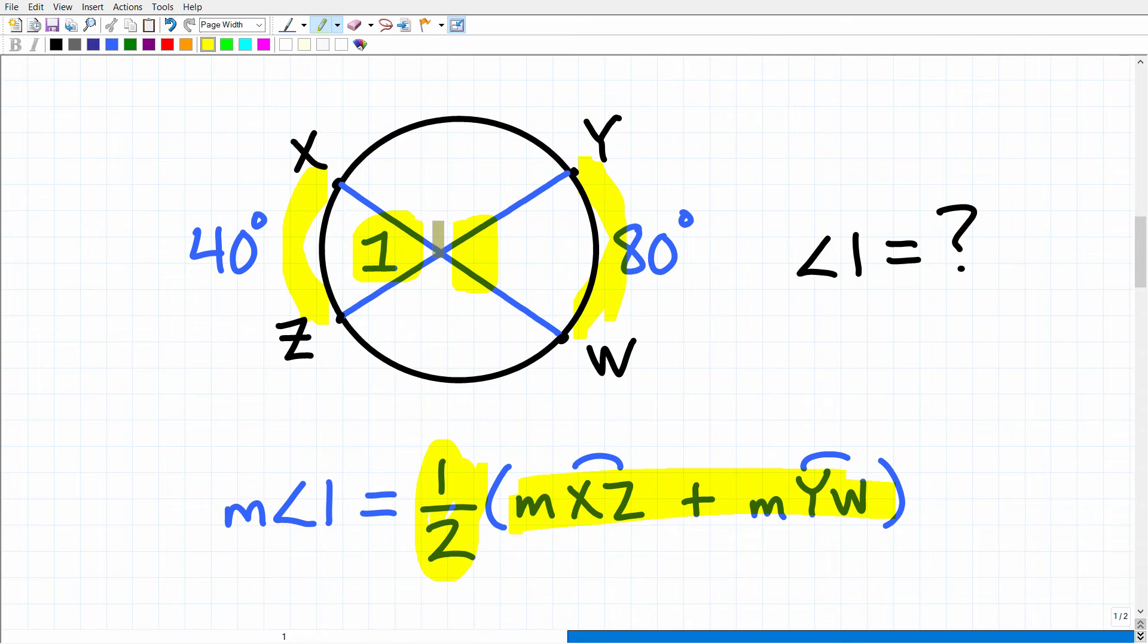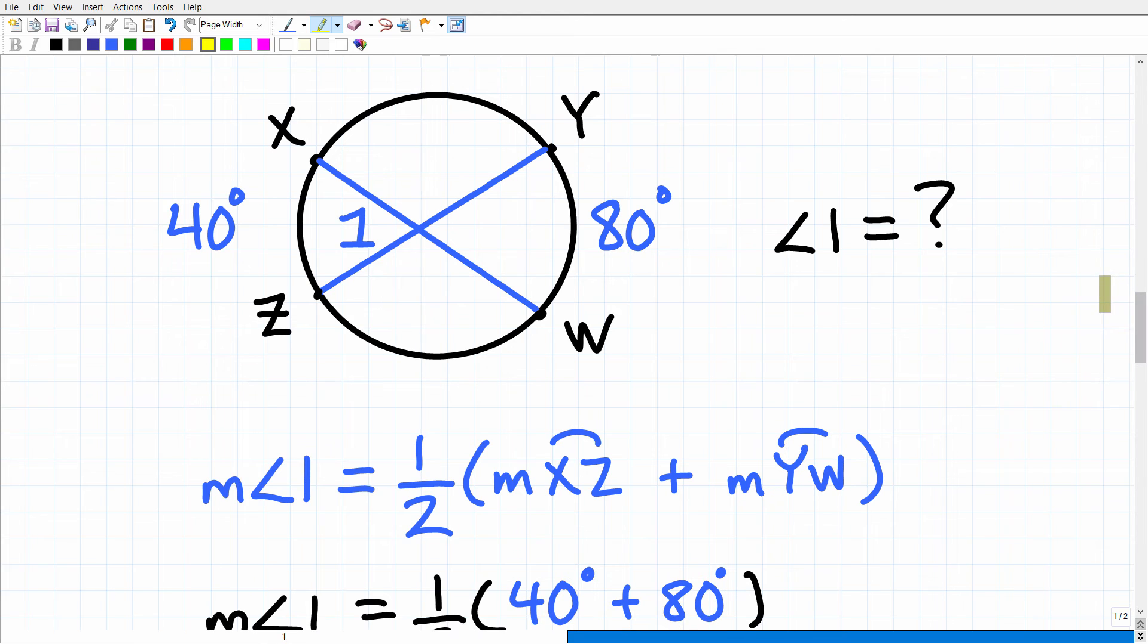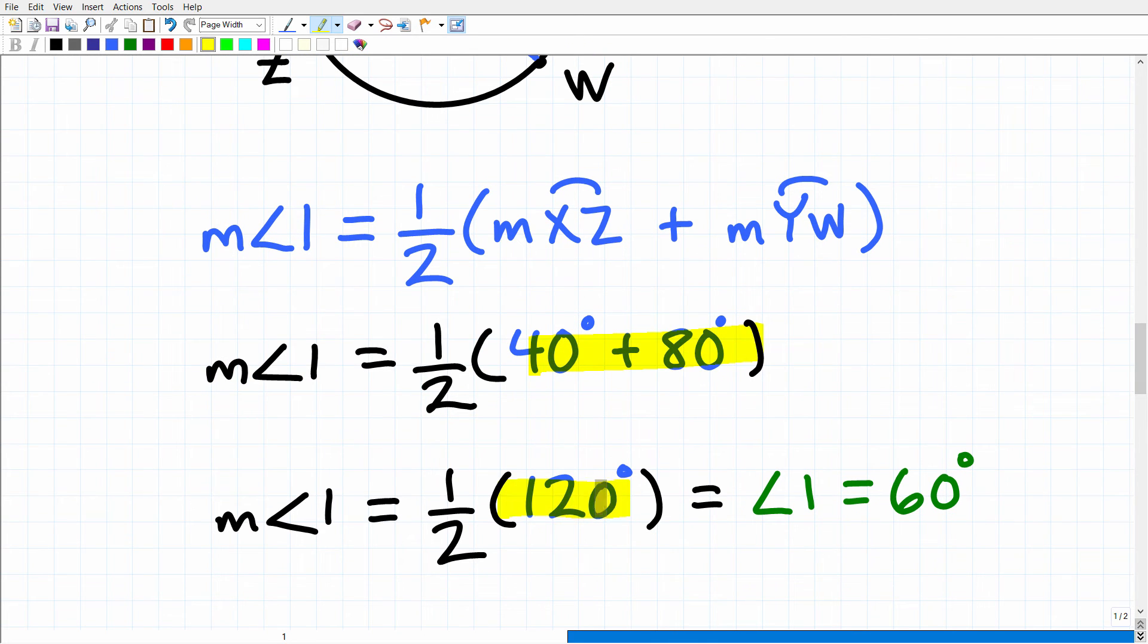Okay, so probably the hardest part about this problem is remembering the formula. So let's go ahead and apply the formula again. Very simple now that we know how to solve this problem. So we're going to take 40 plus 80 and average those out. So 40 plus 80 is obviously 120, and one half of 120 is 60. So that is angle 1.